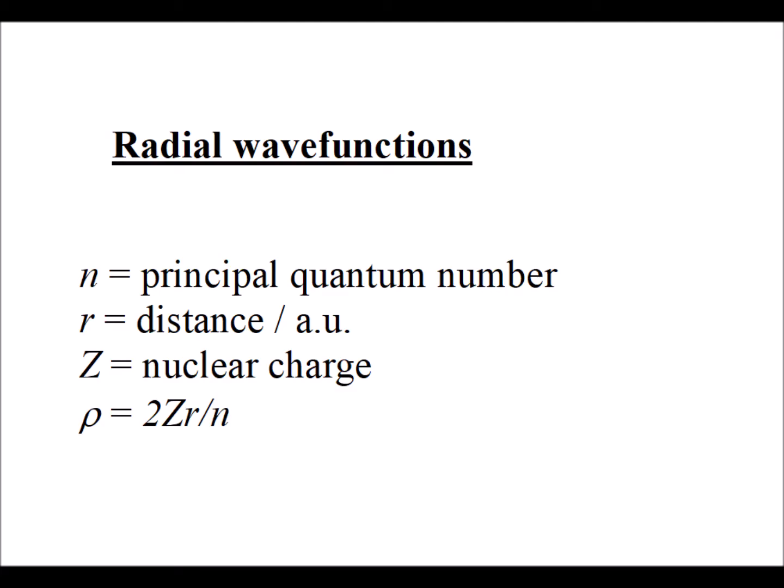In this video, we are going to look at the radial part of the orbital wave function. We're going to use the number n to be the principal quantum number. r is the distance in atomic units in terms of Bohr length, which is 52.9 picometers. z is nuclear charge, and then we have this variable rho, which is 2zr divided by n.